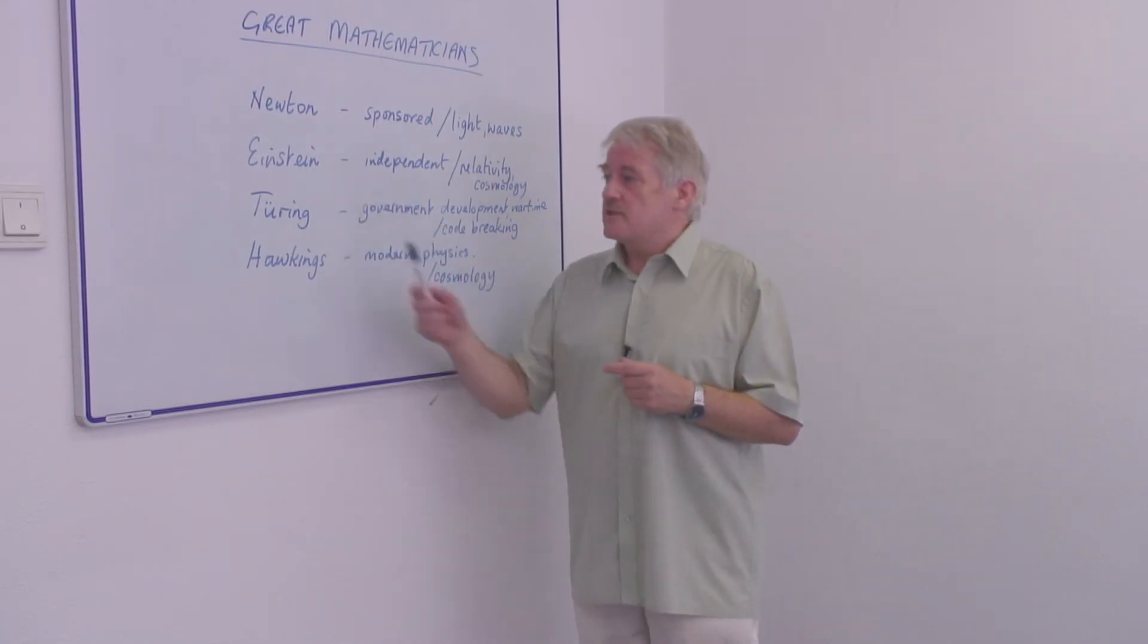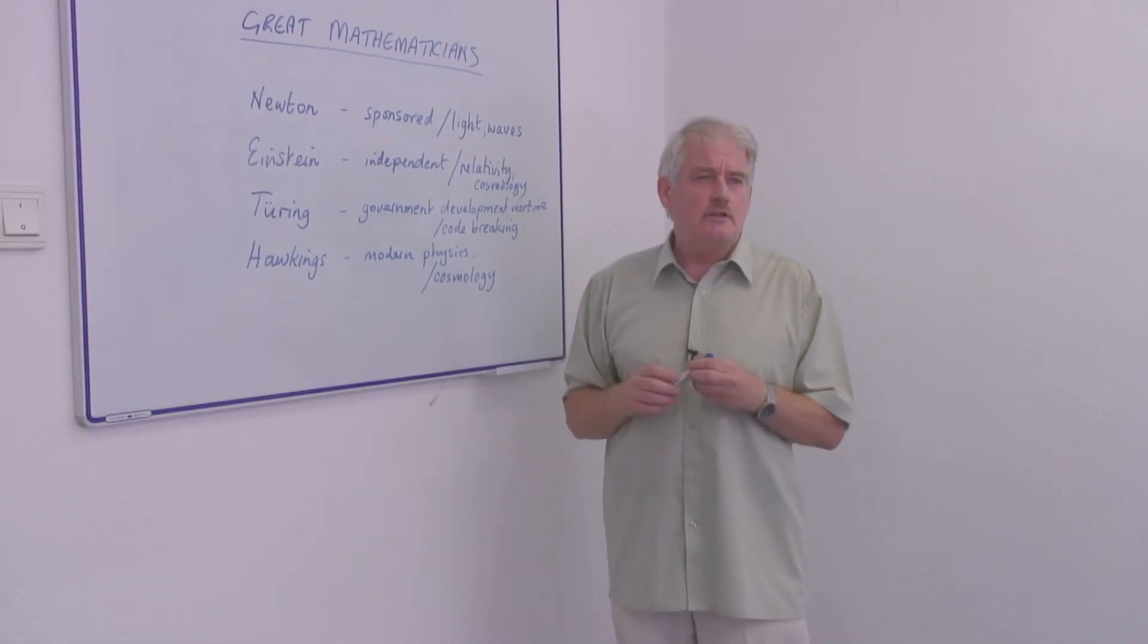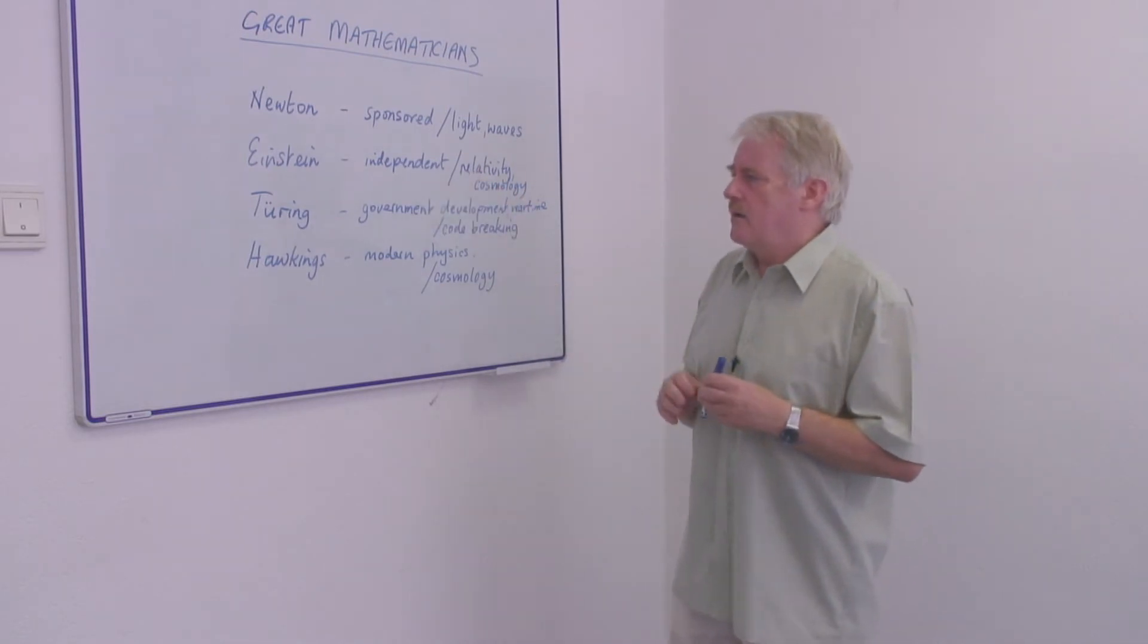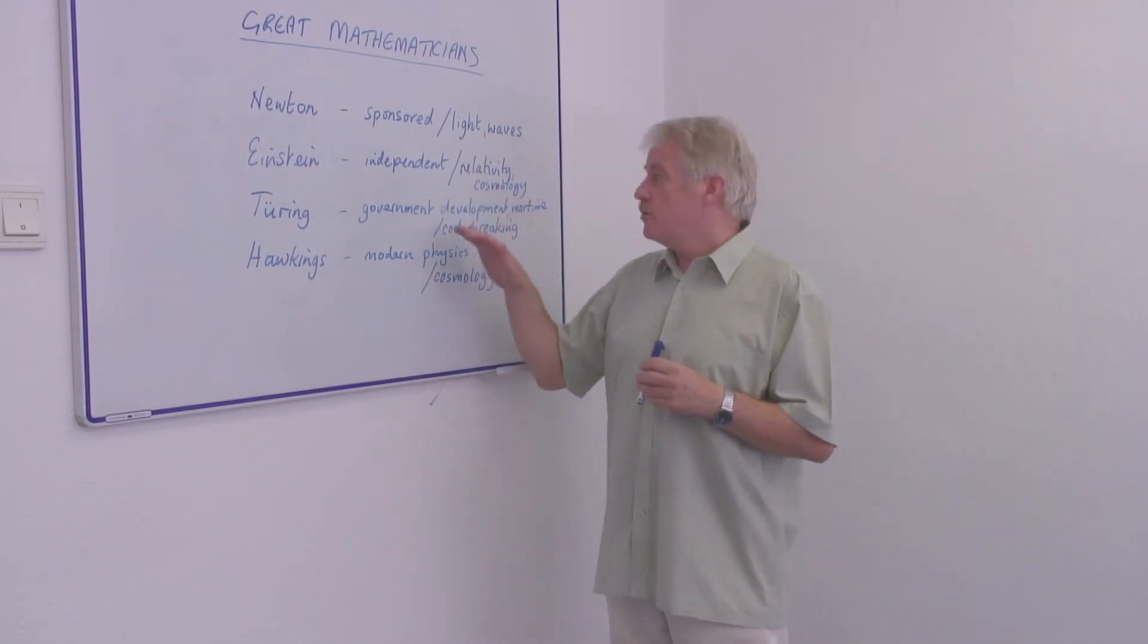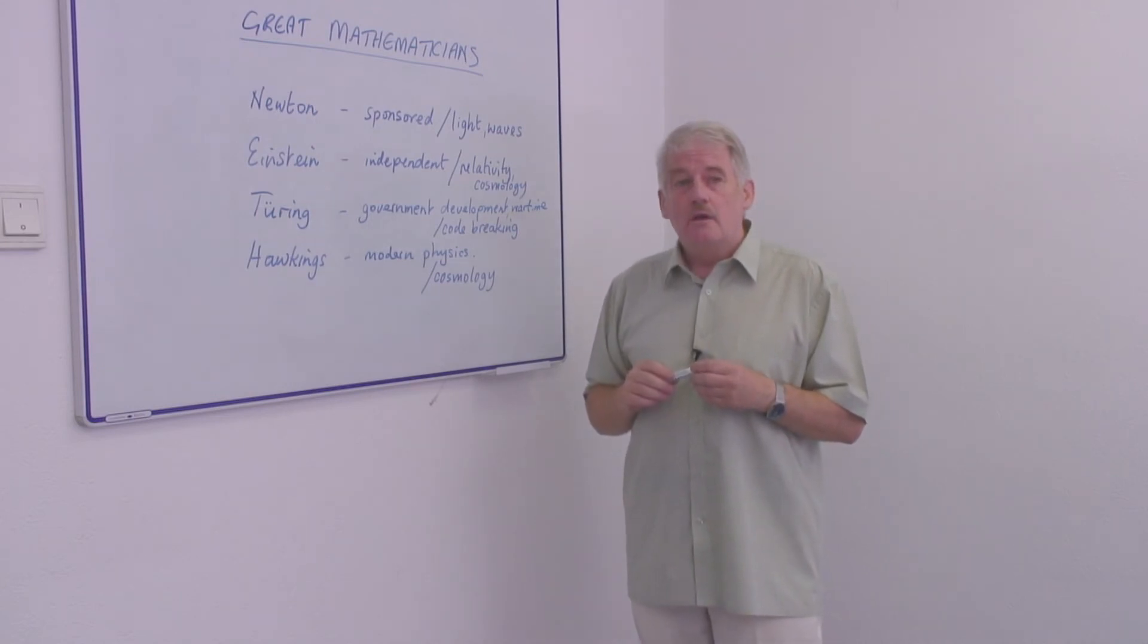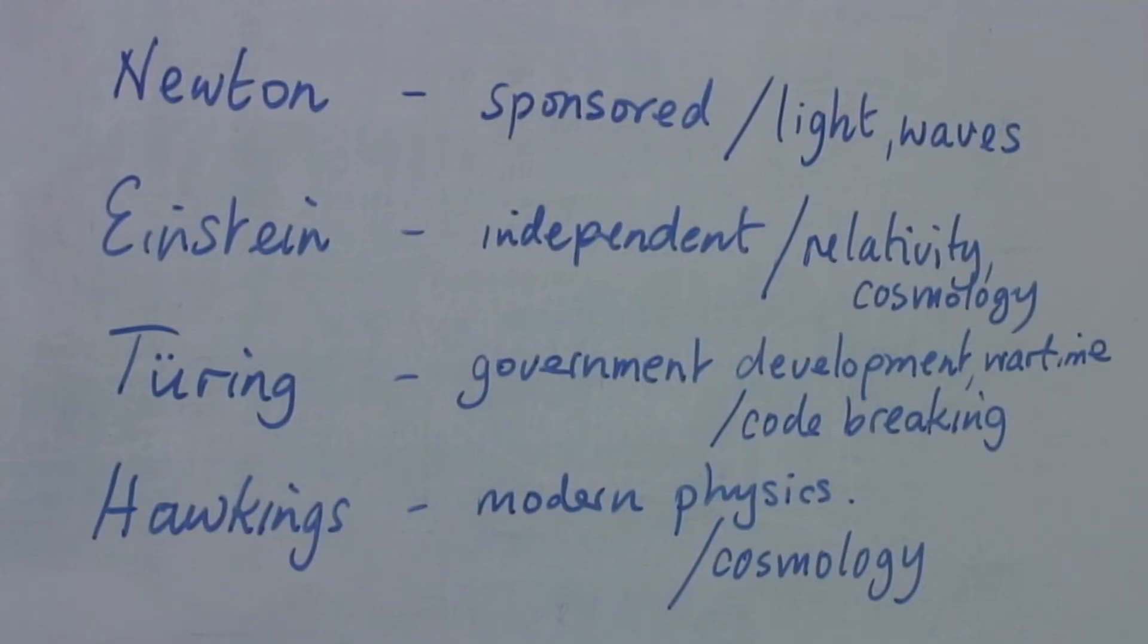Later on mid twentieth century is Turing. Turing was very much a theoretical mathematician but again his skills were used by the government during the war, during the second world war, in code breaking. So mathematical skills are very important when you have to break codes, and code breaking was a very important thing during that time.